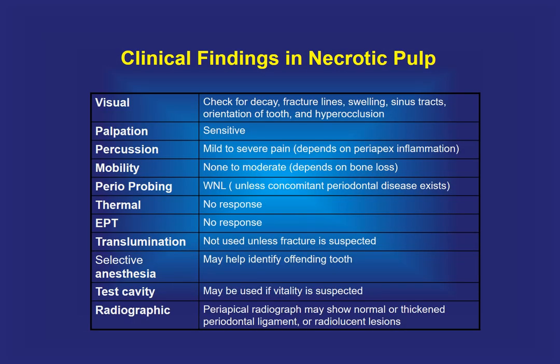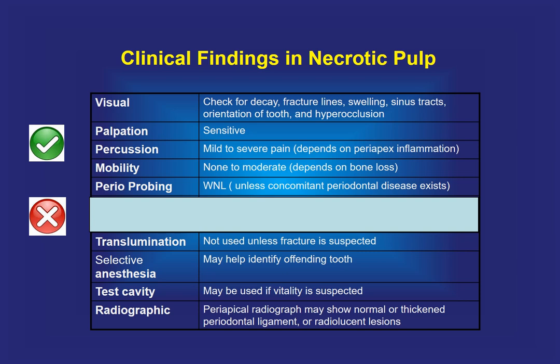Clinical findings in necrotic pulp: here, visual, palpation, percussion, mobility, and periodontal probing are beneficial because there is a possibility of inflammation reaching the periapical region. Thermal testing and electric pulp tester do not work. Transillumination, selective anesthesia, test cavity, and radiographs are beneficial.